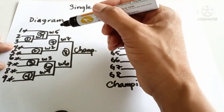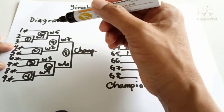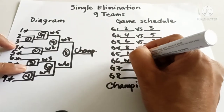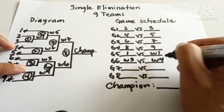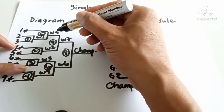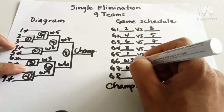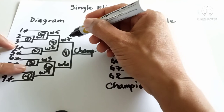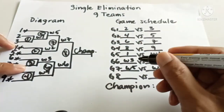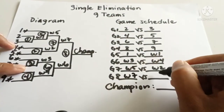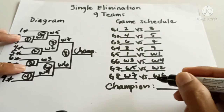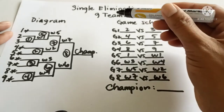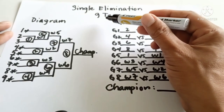In game six we have winner three versus winner four. In game seven we have winner five versus winner two. In game eight we have winner seven versus winner six. Then champion. This is the diagram for nine teams or nine number of entries.